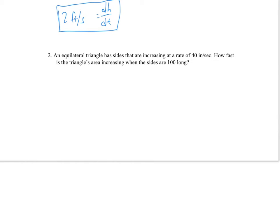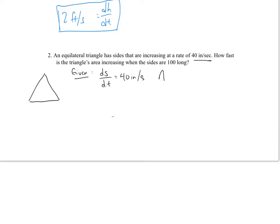Let's examine what we've got. We have an equilateral triangle — let me freehand draw one. The sides are increasing at a rate of 40 inches per second, so this is what we're given: ds/dt = 40 inches per second. We know the area of a triangle is one-half times base times height.